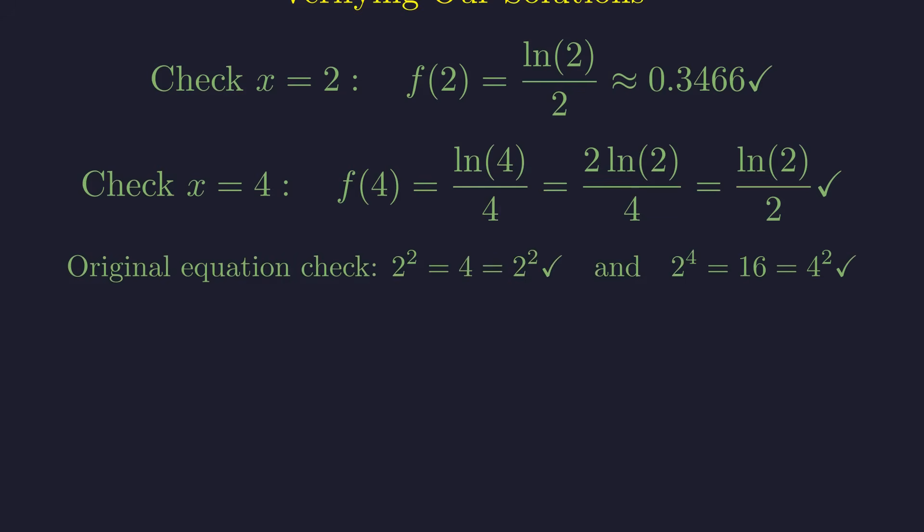And we can double check in our original equation. 2 to the power of 2 equals 4, which equals 2 squared. And 2 to the power of 4 equals 16, which equals 4 squared. Both check out perfectly.